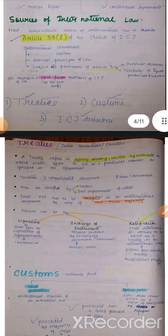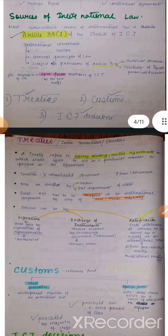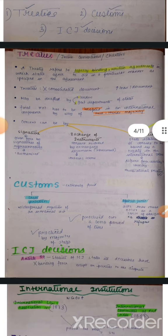Then we come to three other sources apart from Article 38 sub-clause 1. If asked about sources of international law, the first is treaties. Treaties are also called international conventions or charters. A treaty is a legally binding written agreement in which states agree to act in a particular manner. They are not one consolidated document — it consists of a series of documents.